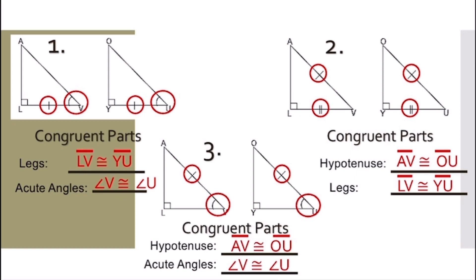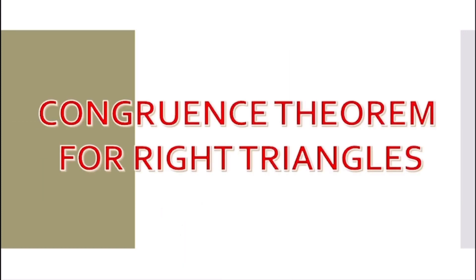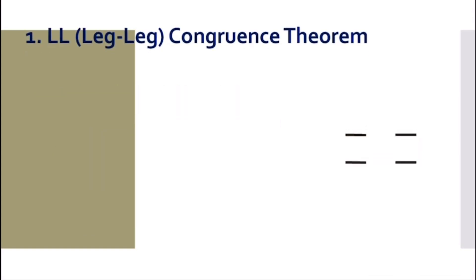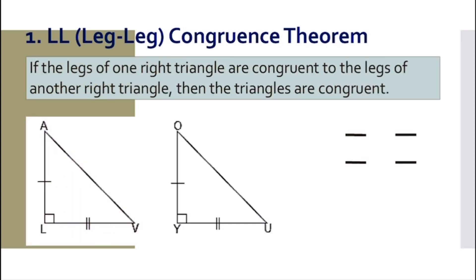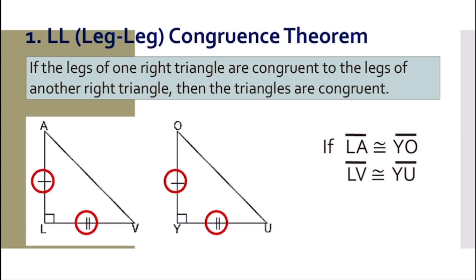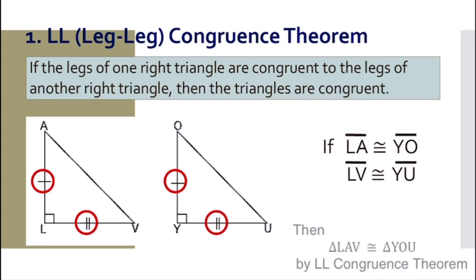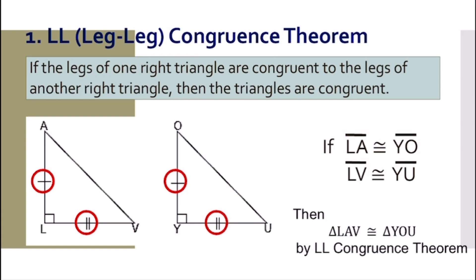Now we're going to discuss the different theorems on triangle congruence for right triangles. For number one, we have the LL congruence theorem, or leg and leg. If the legs of one right triangle are congruent to the legs of another right triangle, then the triangles are congruent. For example, if line segment LA is congruent to line segment YO and line segment LV is congruent to line segment YU, then triangle LAV is congruent to triangle YOU by the LL congruence theorem.